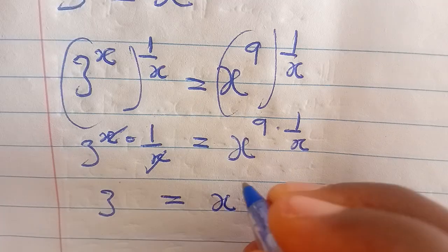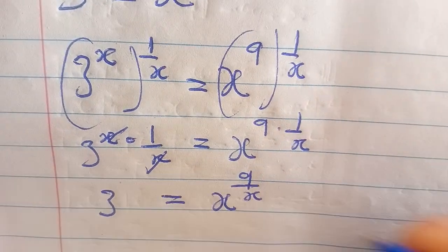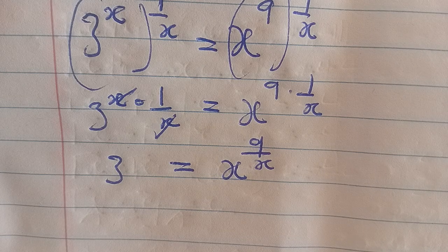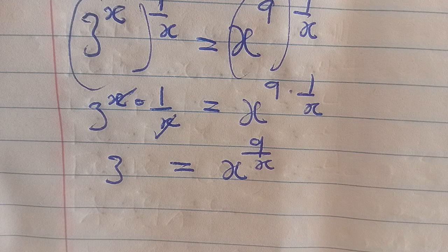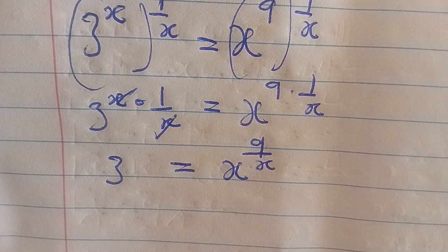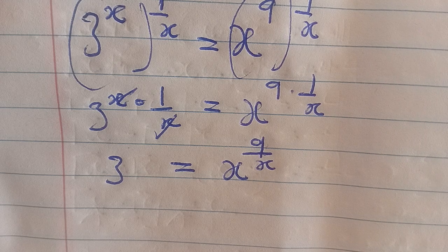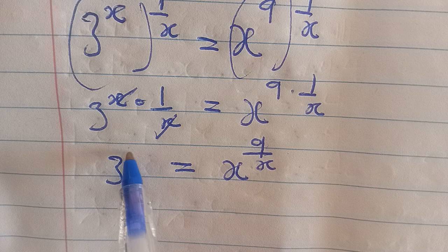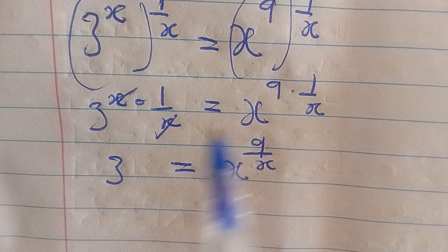It's equal to x exponent 9 over x. Now when we get to this stage, we apply another concept. We want to eliminate this 9, so we introduce 1 over 9 at both sides of the exponents. You multiply this exponent by 1 over 9, and you multiply the exponent here, which is 1, by 1 over 9.